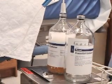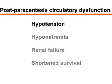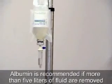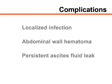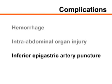Post-paracentesis circulatory dysfunction may occur after large-volume paracentesis and may lead to hypotension, hyponatremia, renal failure, and shortened survival. Although the use of albumin as a plasma expander is controversial, its use is recommended if more than 5 liters of fluid have been removed. Other complications of paracentesis include localized infection, abdominal wall hematomas, and persistent ascites fluid leak. More serious complications are rare and include hemorrhage, intra-abdominal organ injury, and inferior epigastric artery puncture.